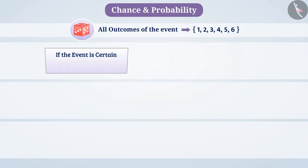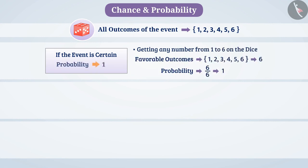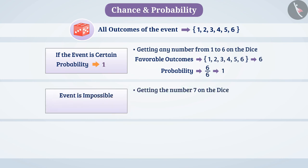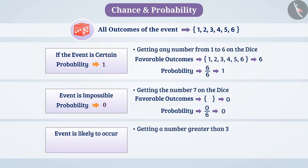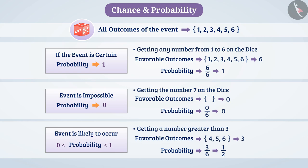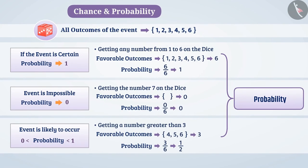If the event is certain, for example getting any number from 1 to 6 on the dice, then the probability is 1. And if the event is impossible, like getting the number 7 on the dice, then the probability is 0. But when an event is likely to occur, such as obtaining a number greater than 3, the probability is greater than 0 but less than 1. In this way, the probability of any event can be 0 or more than it, but 1 or less than it.